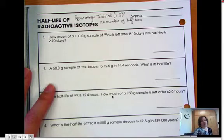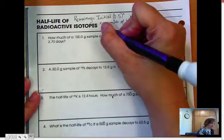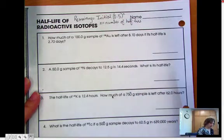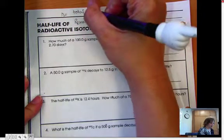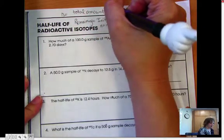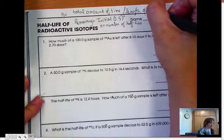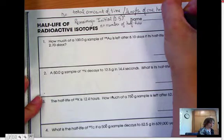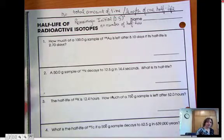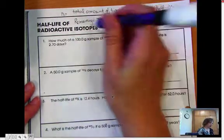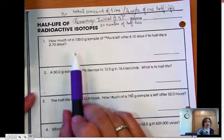Sometimes the problem will tell you how many half-lives have gone by. Sometimes they don't tell you. If they don't tell you, then you have to work it out. I'm going to write this up to the top. n is the total amount of time divided by the length of one half-life. So you can find n that way too. And since you have a mathematical formula here, all you have to do is identify in the problem what your variables are and plug it in.